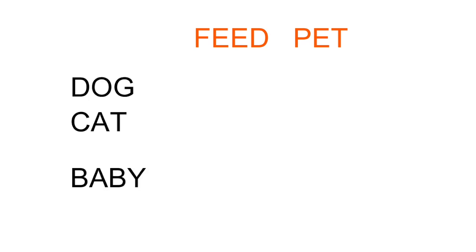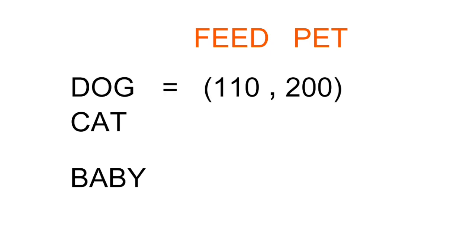For example, you could have a context word like 'pet' and another context word like 'feed.' If you think about words such as 'dog,' 'cat,' or 'baby' — if you look at 'dog,' it will occur frequently with 'pet' and frequently in the vicinity of 'feed.' Likewise, 'cat' will occur frequently with 'feed' and frequently with 'pet.' So therefore the sequence of numbers you get for 'dog' will be similar to the sequence of numbers you get for 'cat.'